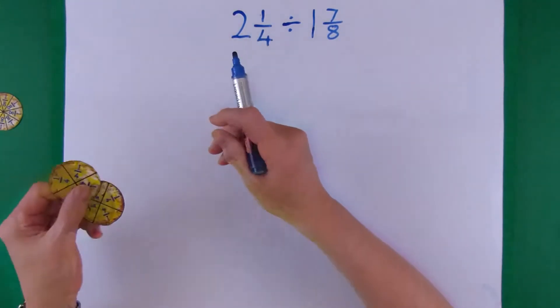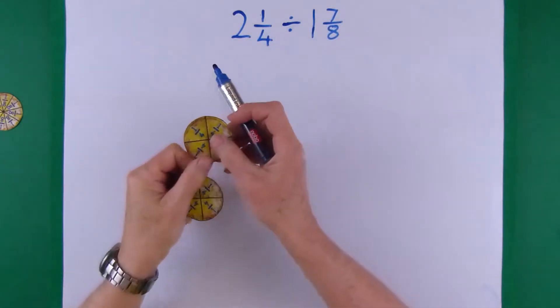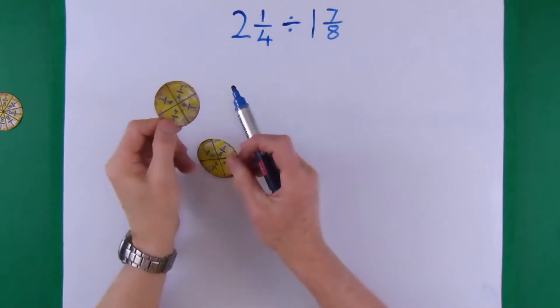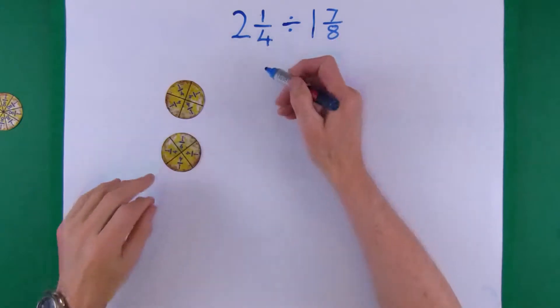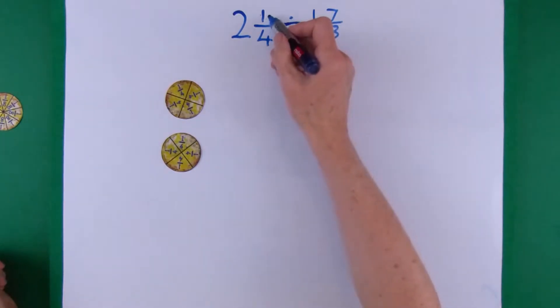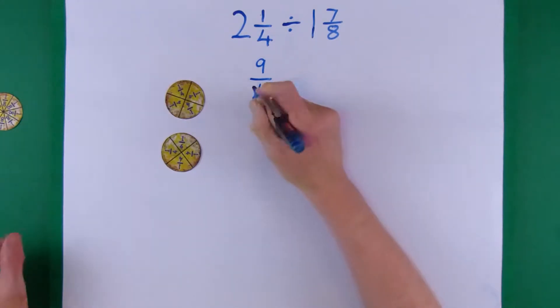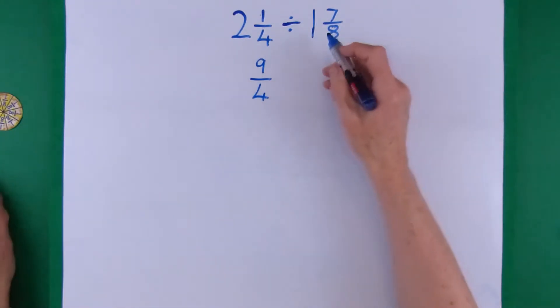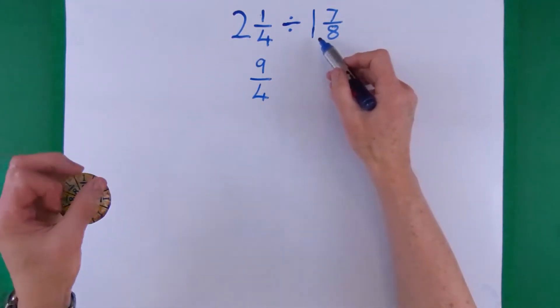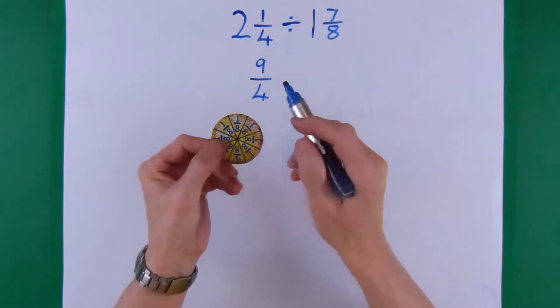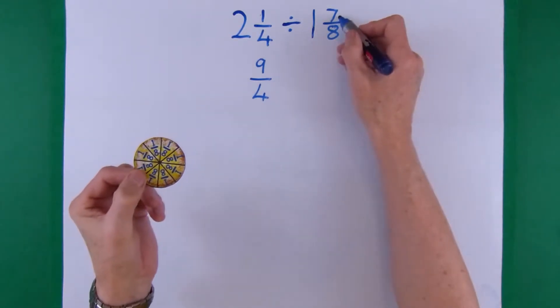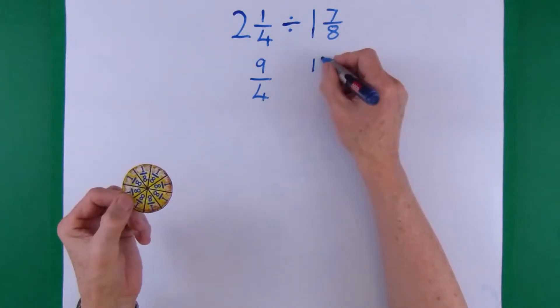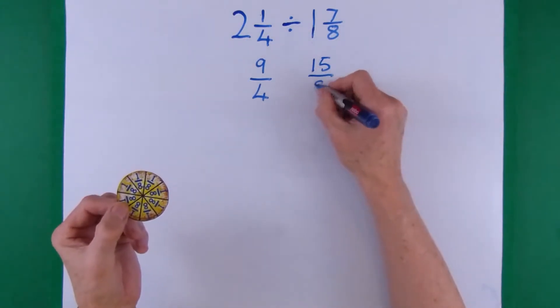We have 2 whole pizzas and it's in quarters. So there's 4 in each. So 2 times 4 is 8 and we've got 1 extra making 9 quarters. Now looking at the second fraction, this time it's an eighth and there's only one pizza. So we'll get 8 eighths in the one pizza plus the 7 gives you 15 eighths.